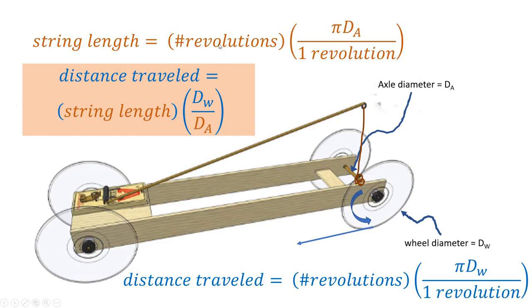If you look at the number of revolutions, it's string length divided by pi dA, so I'm just rearranging that and substituting for revolutions here. So revolutions is equal to string length over pi dA, the pi's cancel out, and you're left with the ratio of the diameter of the wheel of the car divided by the diameter of the axle.